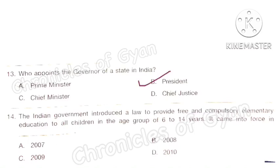Question 14: The Indian government introduced a law to provide free and compulsory elementary education to all children in the age group of 6 to 14 years. Although this law was passed earlier, it came into force in the year corresponding to option D.